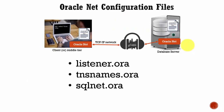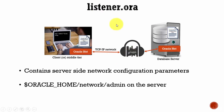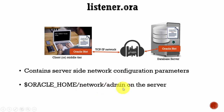Now we will see what are the various network configuration files we need. We have three important network-related files: listener.ora, tnsnames.ora, and sqlnet.ora. These three files are very important for networking. The listener.ora file contains all the network-related configuration parameters and is present on the database server. It is stored in the directory oracle.home/network/admin. Whenever you are looking for this file, go to that path and you can find the listener.ora.